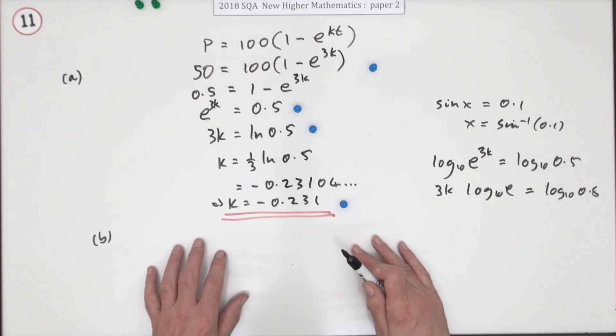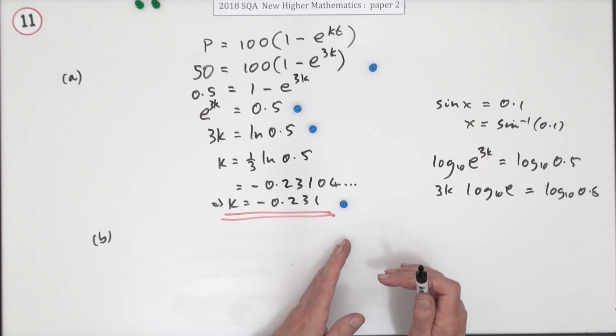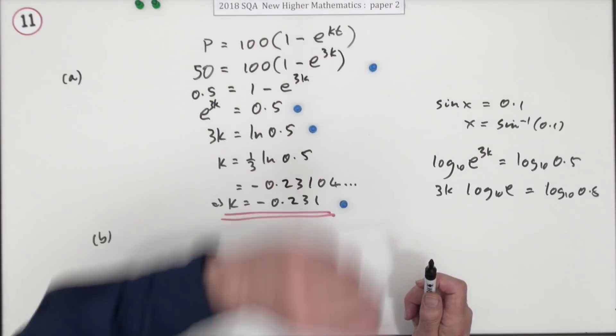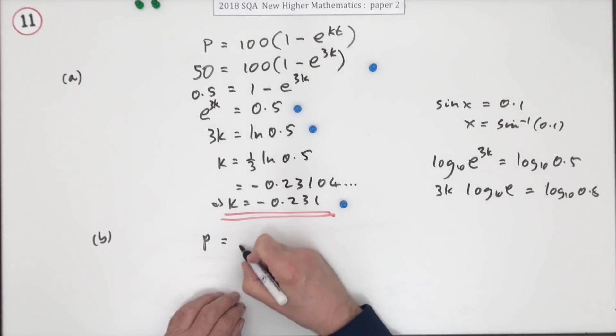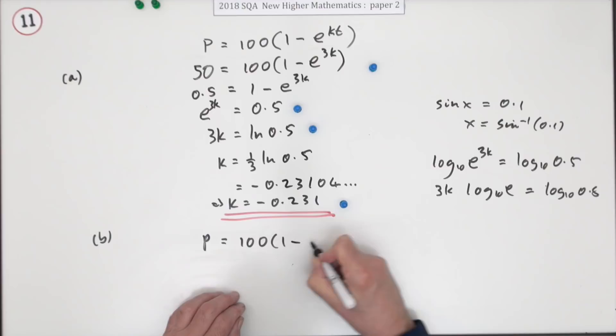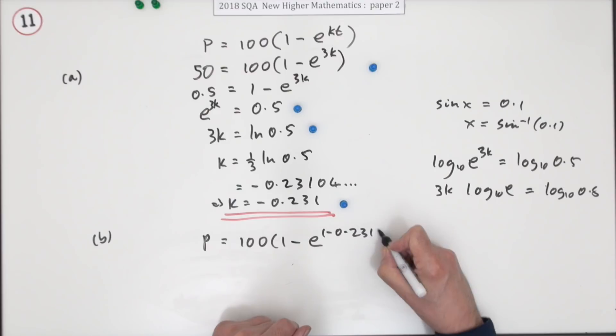So when it says how many queue for five minutes or more, you'll have to take away those that queue for less than five. So you'd probably start it off the same way. You'd work out the percentage, putting a five in. So that's 100 times 1 minus e to the, you know this number already, negative 0.231 times five.